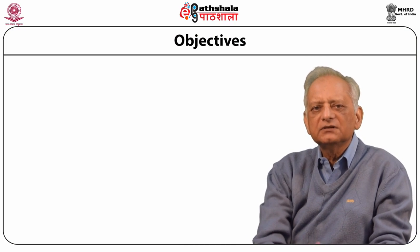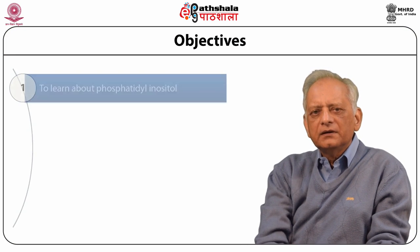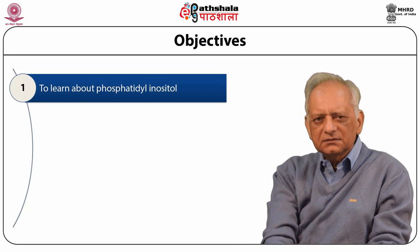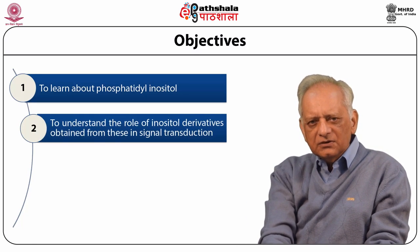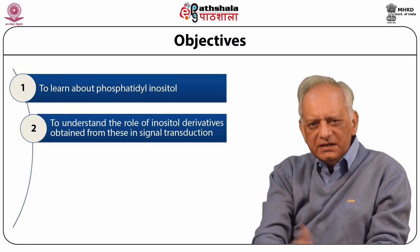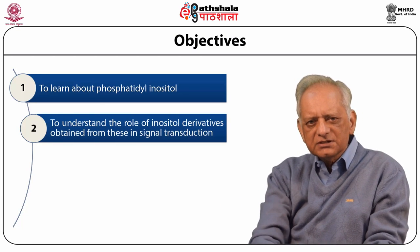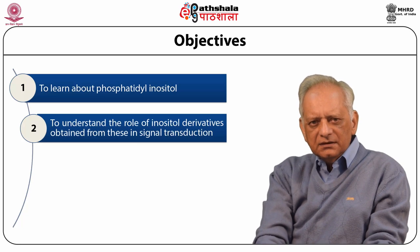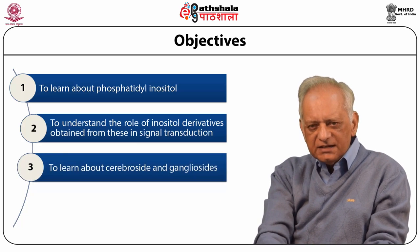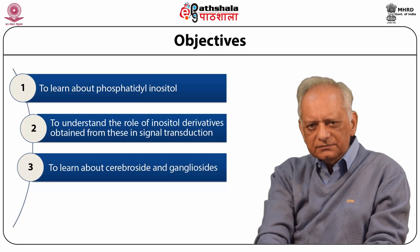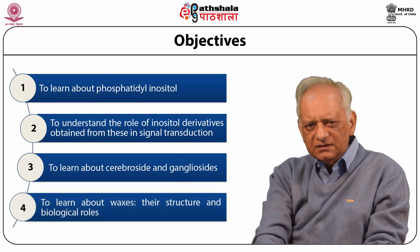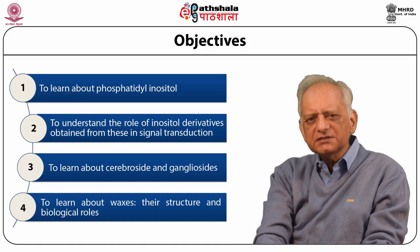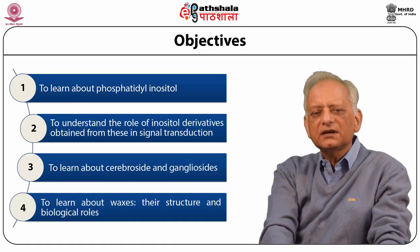The objectives of this module are to learn about phosphatidyl inositol, to understand the role of inositol derivatives obtained from these in signal transduction processes, and also to learn about cerebrocytes and gangliocytes, two other classes of complex lipids. And finally to learn about waxes, both their structure and of course their biological role.